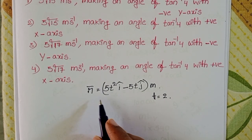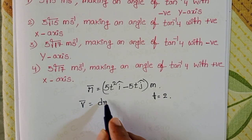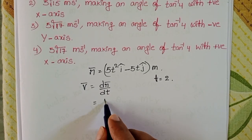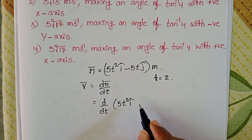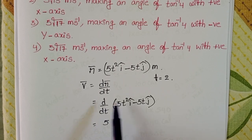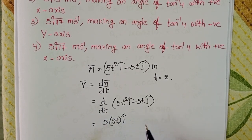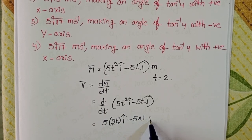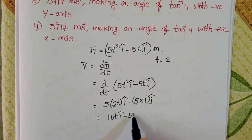Rate of change of displacement is called velocity, so v bar equals dr bar by dt. Differentiating with respect to time: d by dt of (5t² i cap minus 5t j cap) gives 5 into d by dt of t² equals 2t into i cap, minus 5 into dt by dt which is 1, j cap. This gives 10t i cap minus 5 j cap.